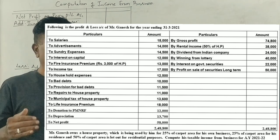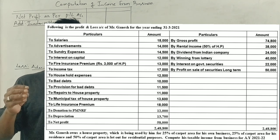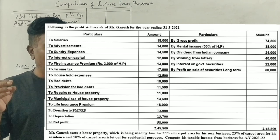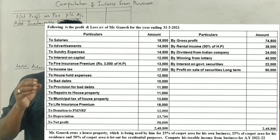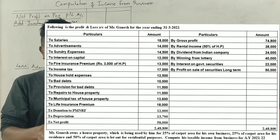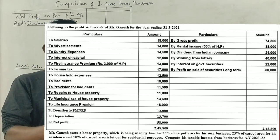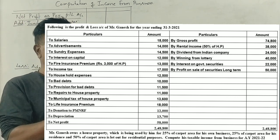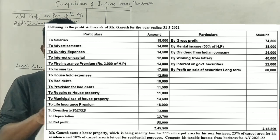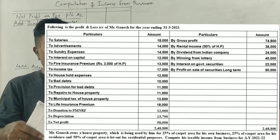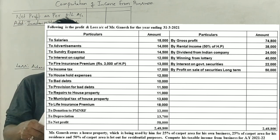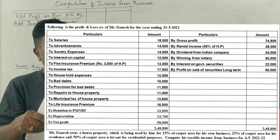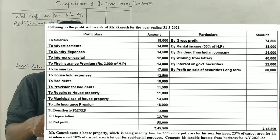From the debit side of the profit and loss account: salaries, advertisement, sundry expenses, interest on capital, fire insurance premium of Rs. 3,000 related to house property, income tax, household expenses, gross profit, rental income, 50 percent house property, dividend from Indian company, winning from lottery, interest on government securities, profit on sale of securities, long-term, bad debts, provision for bad debts, repairs to house property, municipal tax of house property, life insurance premium, donation to Prime Minister's National Relief Fund, depreciation, and net profit.